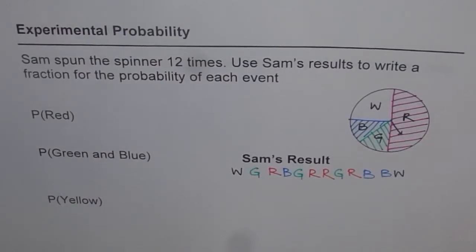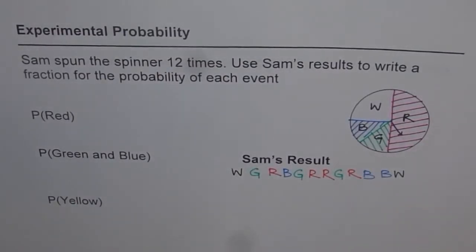Experimental probability. Sam spun the spinner 12 times. Use Sam's results to write a fraction for the probability of each event.